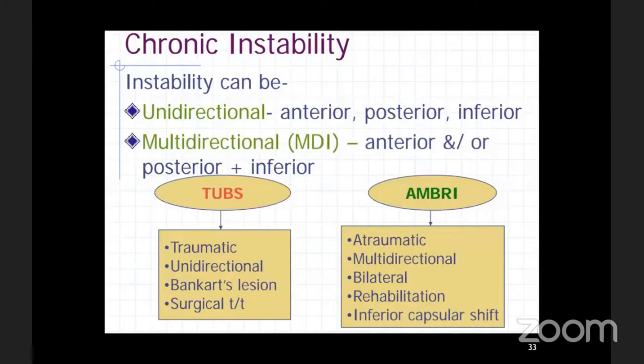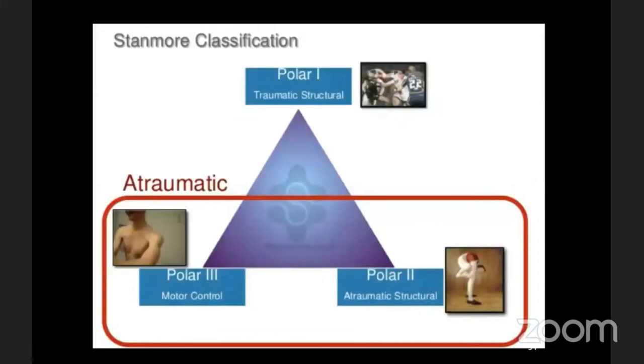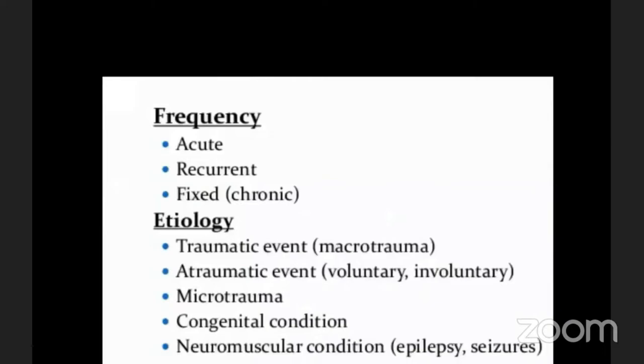This TUBS/AMBRI classification is the oldest and most important one for the exam. Other classifications like the Stanmore classification exist but are less critical for postgraduate examination. When examining the patient, note the frequency — whether it is acute, recurrent, or a fixed dislocation — and the etiology: traumatic, atraumatic, neurological, or epilepsy.